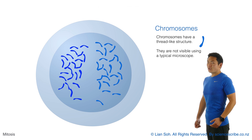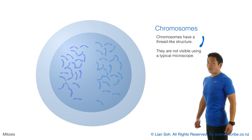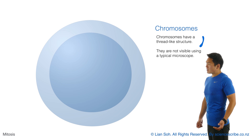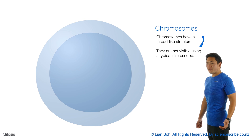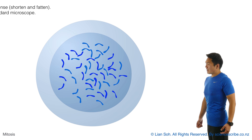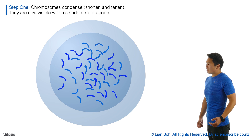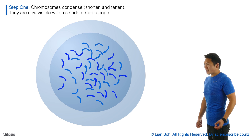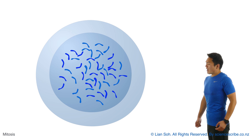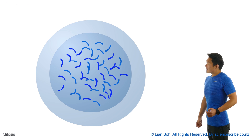These chromosomes have a thread-like structure, as shown here, but they're otherwise not typically visible with an ordinary microscope. The first step of mitosis is that these chromosomes start to condense — they shorten and fatten — and only at this stage do they start to become visible under an ordinary microscope.